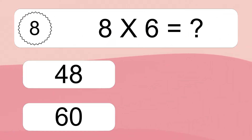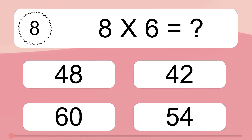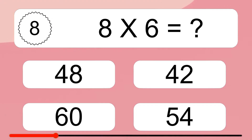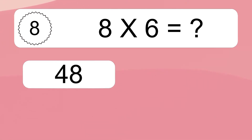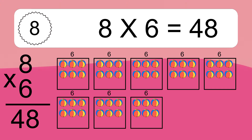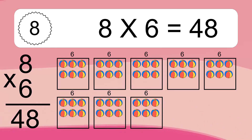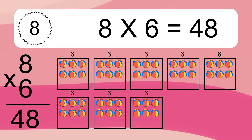8 times 6 equals what? 8 times 6 equals 48. We have 8 boxes, and each box has 6 colorful balls inside. If you count all the balls in all the boxes together, you will have 8 times 6 balls. This equals 48 balls.